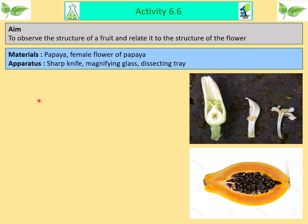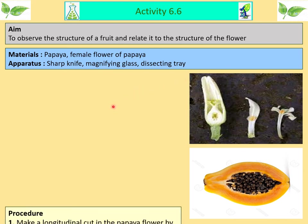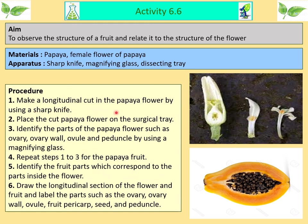Activity 6.6: The aim of this activity is to observe the structure of the fruit and relate it to the structure of the flower. The materials needed are papaya and a female flower of papaya. The apparatus are a sharp knife, magnifying glass and dissecting tray. Procedure: number one, make a longitudinal cut of the papaya flower using a sharp knife; number two, place the cut papaya flower on the dissecting tray; number three, identify the parts of the papaya flower such as ovary, ovary walls, ovules and peduncles using a magnifying glass.